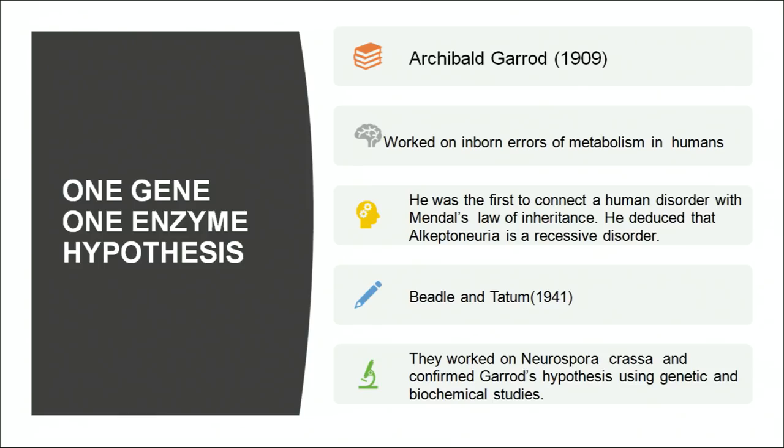Beadle and Tatum actually proposed the hypothesis — one gene, one enzyme hypothesis — which means one gene is responsible for the production of one enzyme. Although this hypothesis does not hold true in the present light of knowledge, because now we know that enzymes are not made up of only one polypeptide; enzymes are made up of more than one polypeptide. Beadle and Tatum worked on an organism Neurospora crassa, which was irradiated with X-rays. X-rays are mutagens which can bring about change in the genetic makeup of an organism.